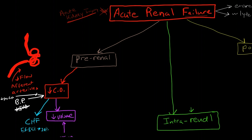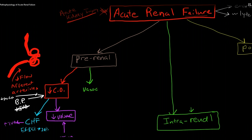Blood pressure could also drop because of massive vasoconstriction or decreased volume. With decreased volume you're going to see decreased jugular venous distension, and with CHF you're actually going to see increased jugular venous distension. If you have a patient going into renal failure, it's a good thing to keep those things in mind. The next part of pre-renal acute renal failure I want to discuss is renal failure caused by vasoconstriction.